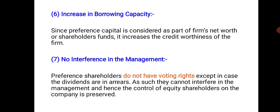Seventh, no interference in management. Preference shareholders do not have voting rights except in the case where dividends are in arrears. Generally, preference shareholders have no voting rights and cannot interfere in management — except when dividends are in arrears, in which case they do get voting rights. As such, they cannot interfere in management, and hence the control of equity shareholders over the company is preserved permanently.